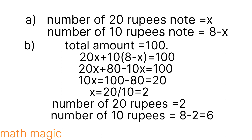Opening the bracket: 20x plus 10 into (8 minus x) equals 100. Expanding: 20x plus 80 minus 10x equals 100. Simplifying: 10x plus 80 equals 100. Then 10x equals 100 minus 80, so 10x equals 20.